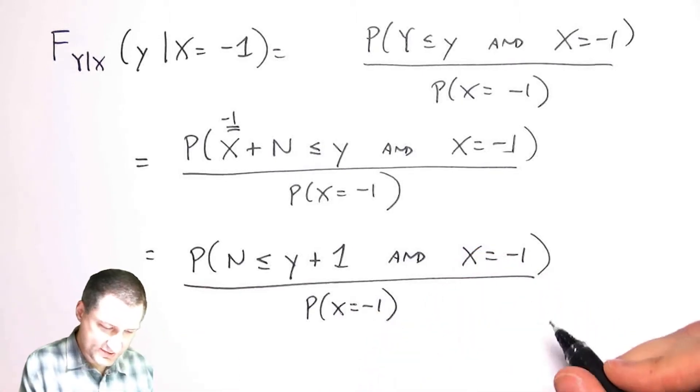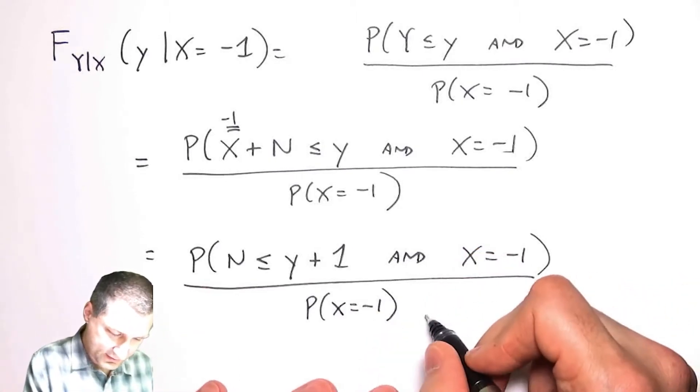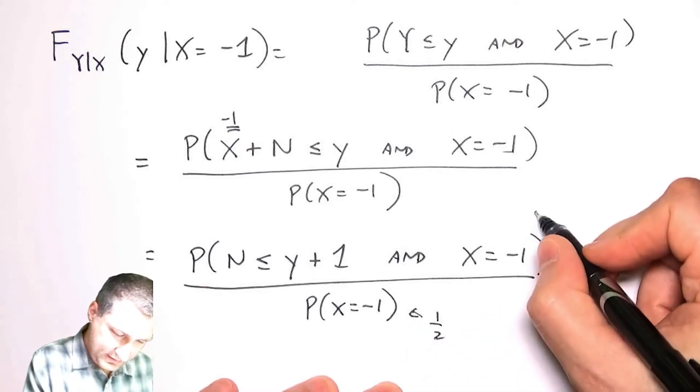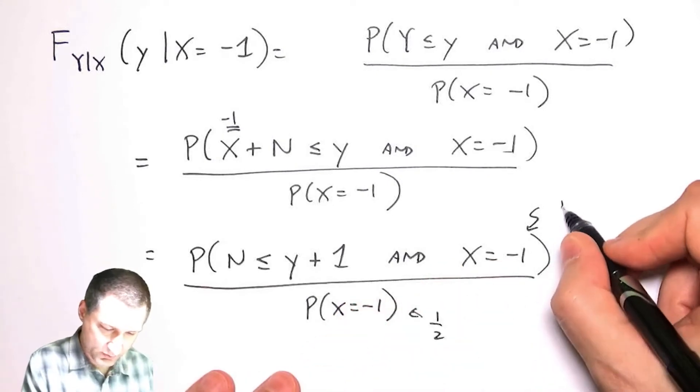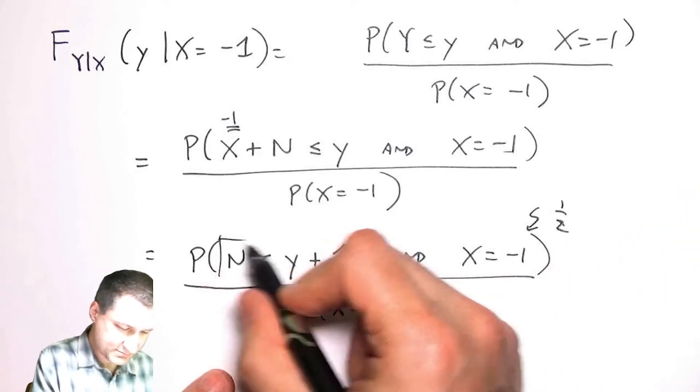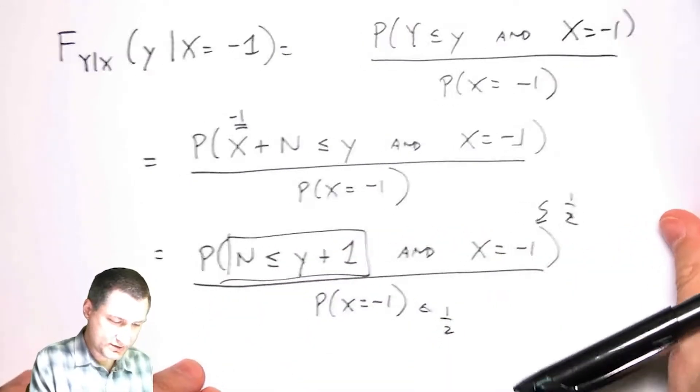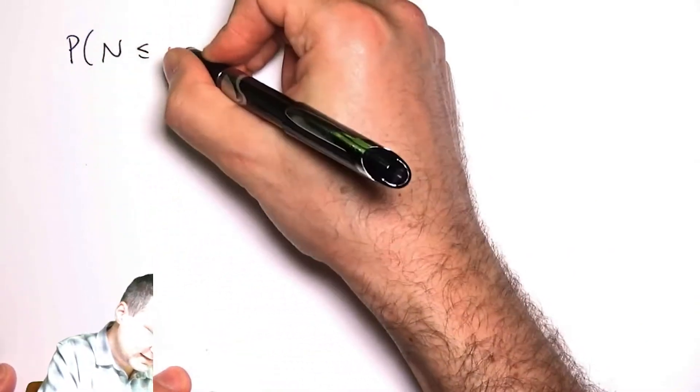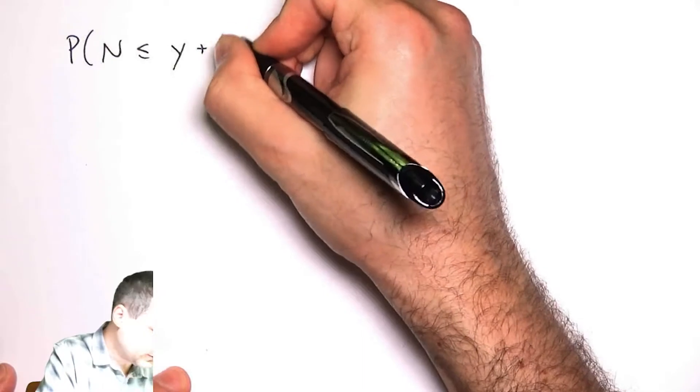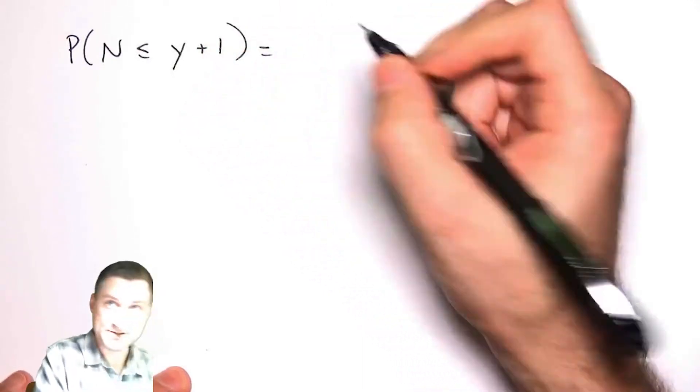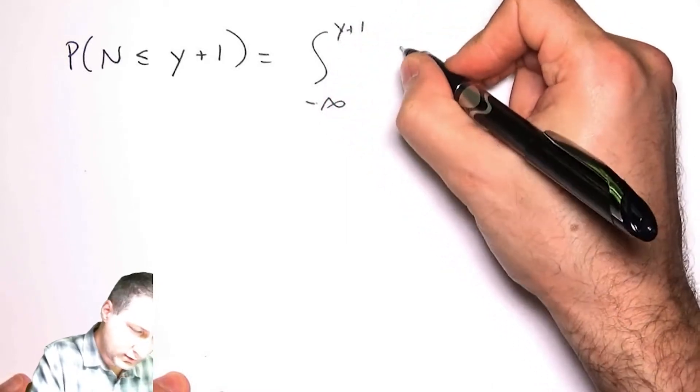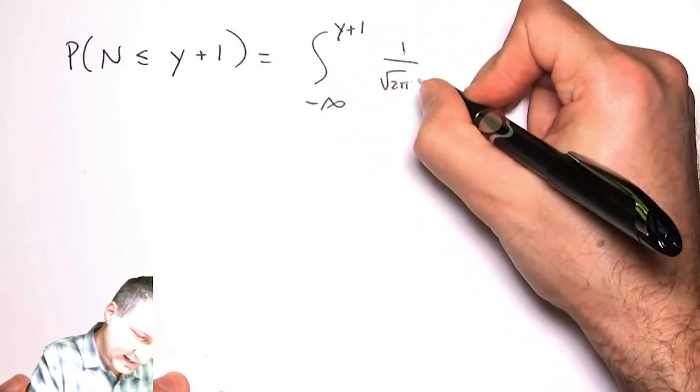Now since both these things are independent, basically this number here is one half, this number here, this part of it, is going to be one half, and all I need to compute is this part. What is the probability that the noise is less than this number? Well, I told you it was Gaussian. So that means I've got a Gaussian random variable and I want to know what is the probability. I'd have to do this integral du.